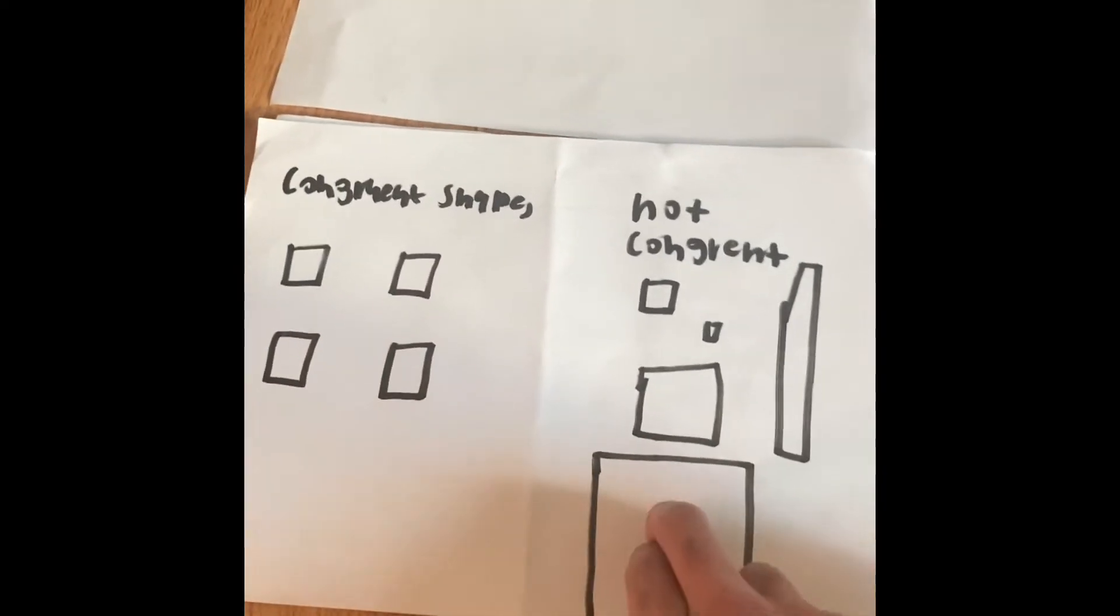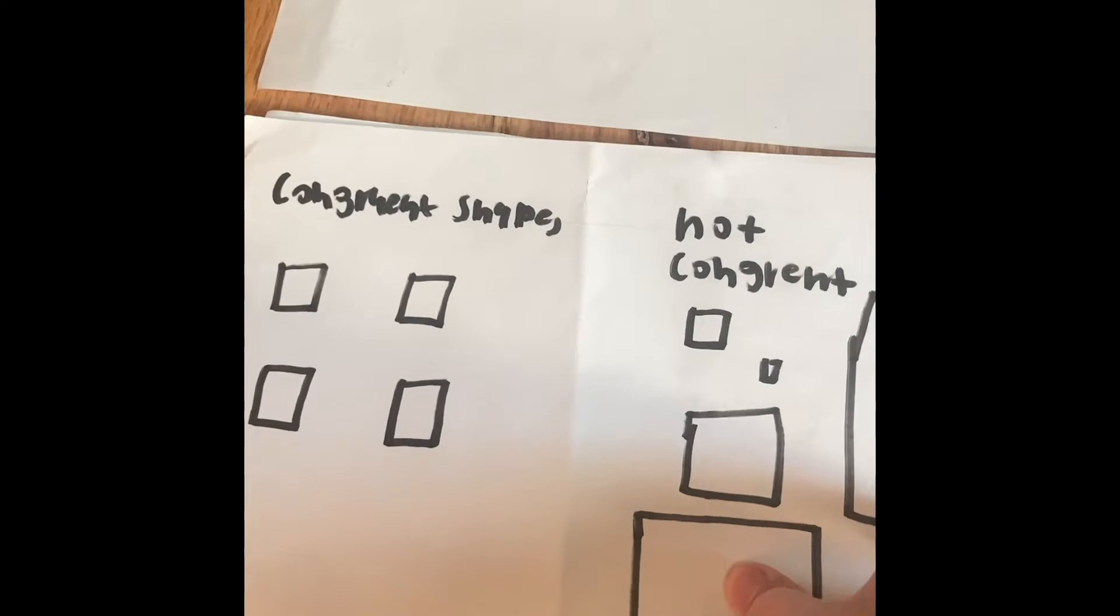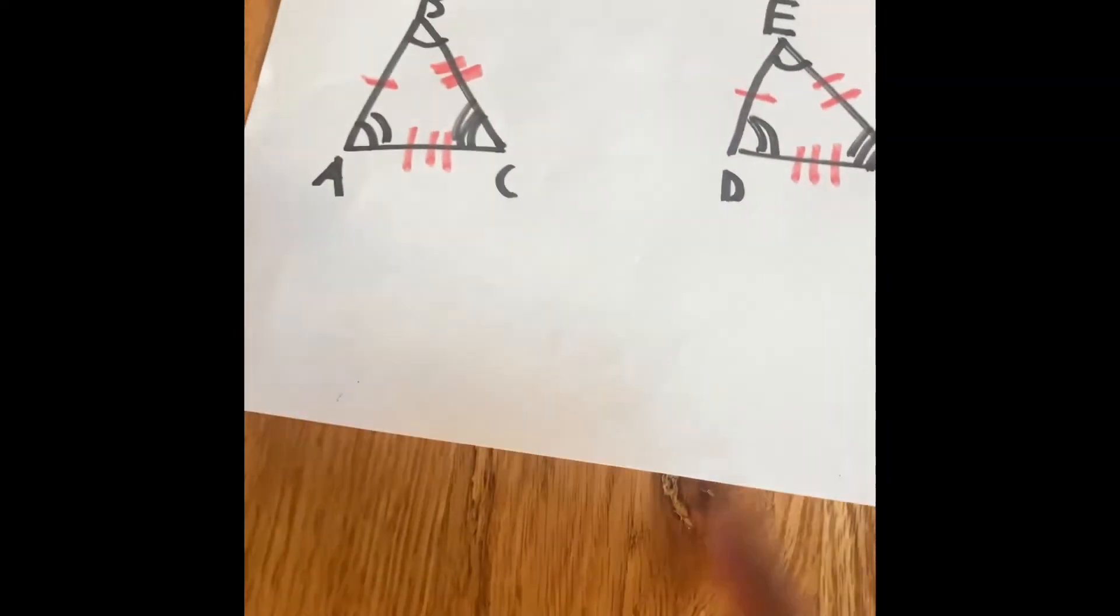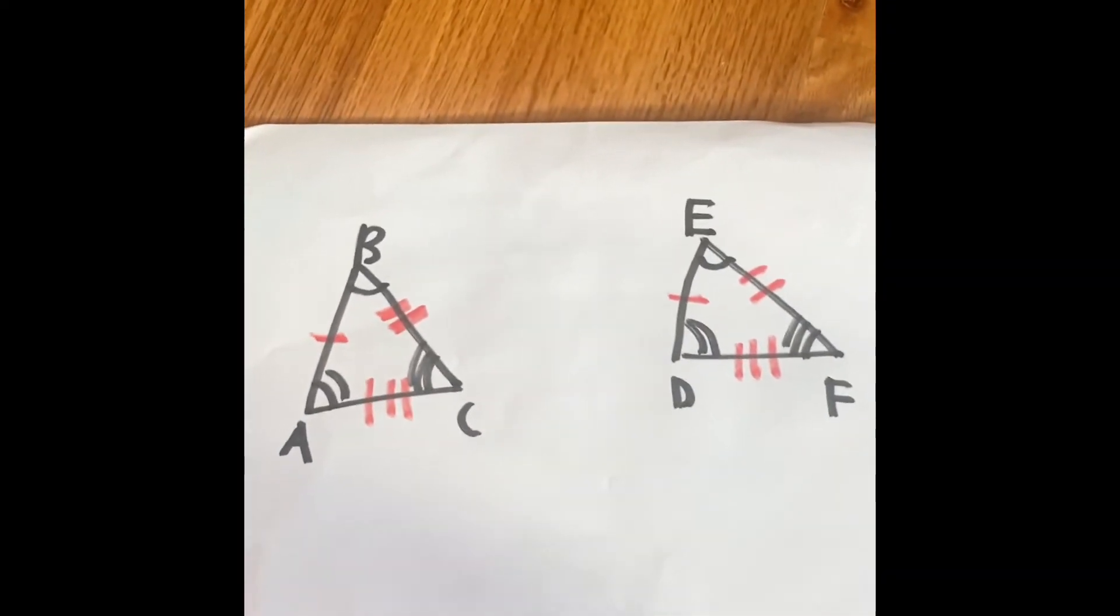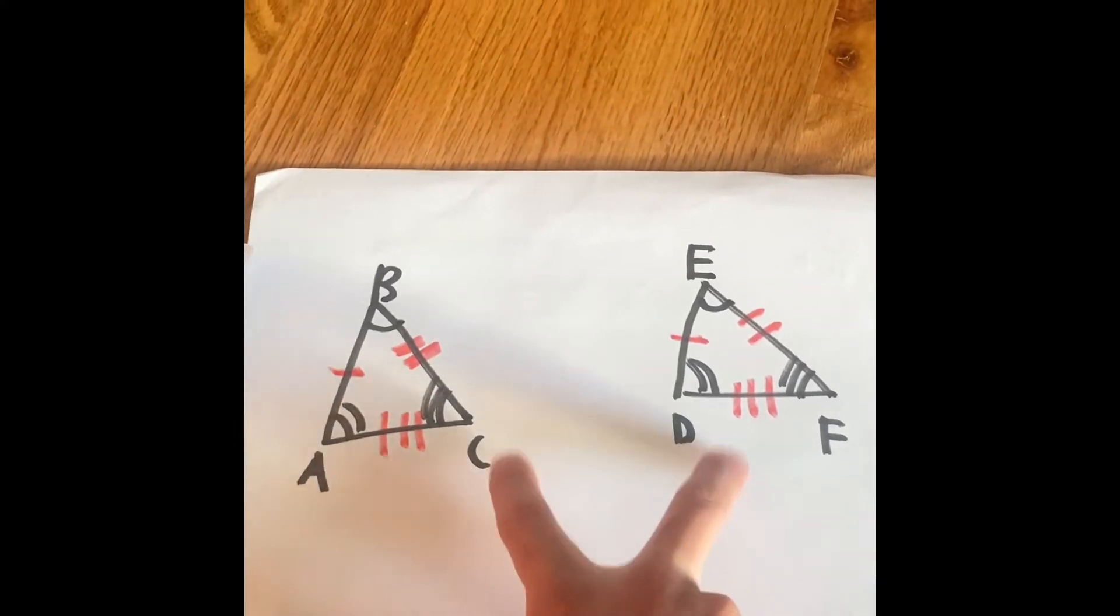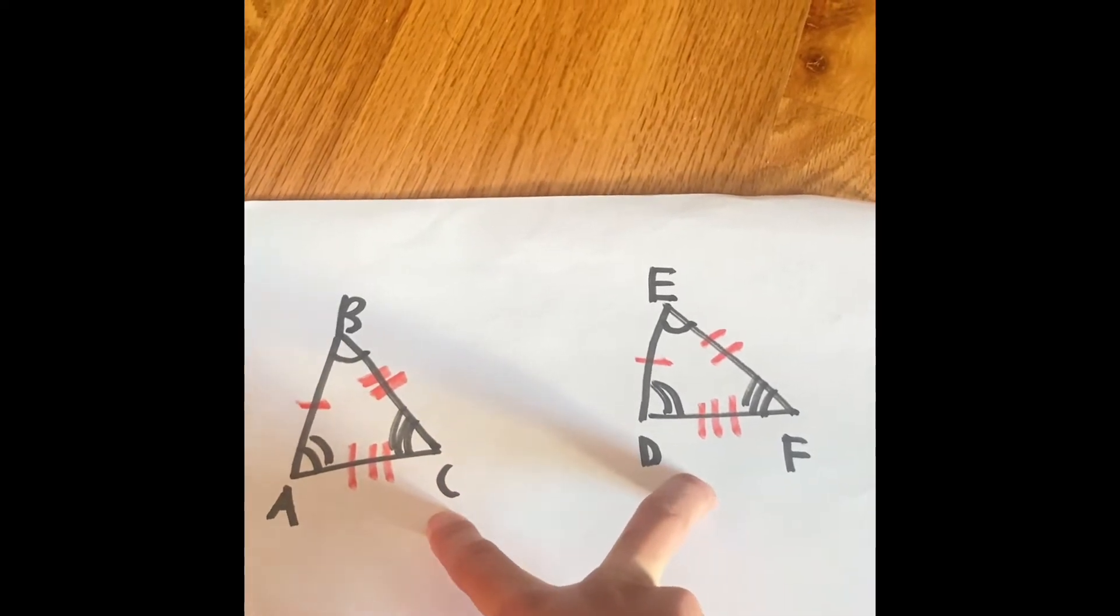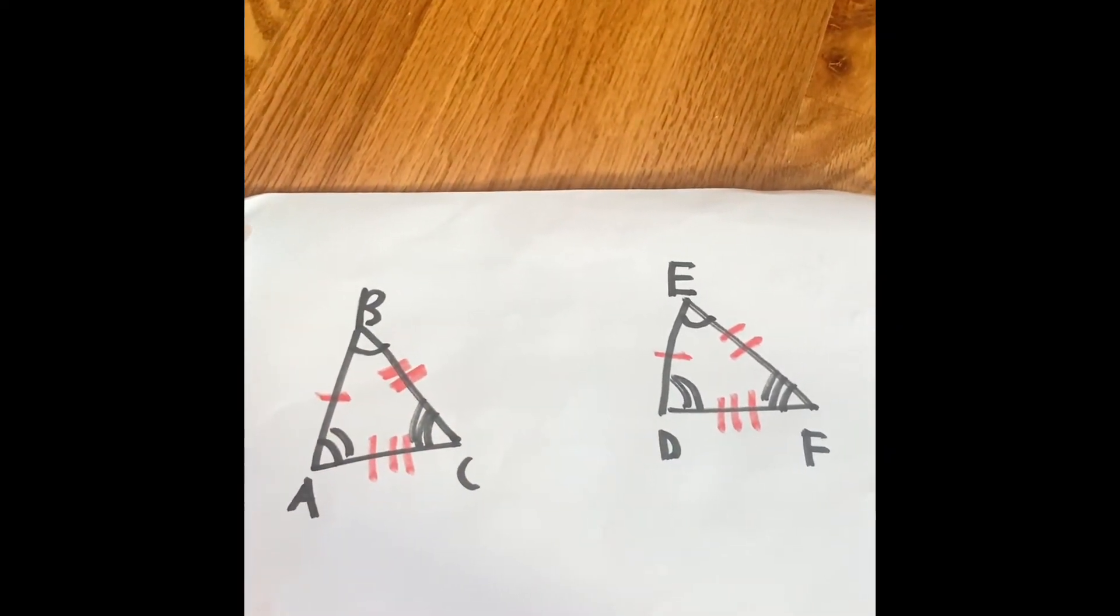We already know what the simple definition of congruent is. But what happens if we have these two shapes right here? How can we say they are both congruent, and how can we also say they are congruent figures?